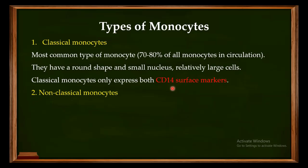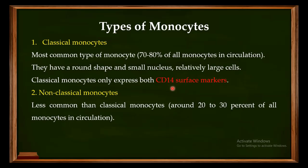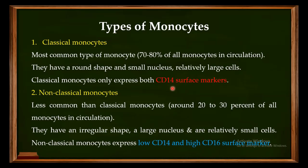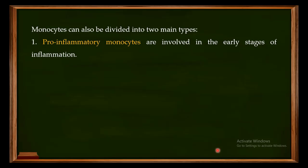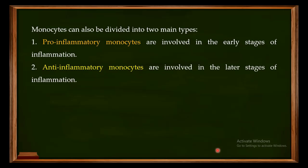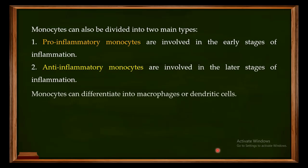The second type is the non-classical monocytes, which make up about 20 to 30 percent of all circulating monocytes. Compared to classical monocytes, non-classical monocytes express a low level of CD14 and a high level of CD16 surface markers. A second classification distinguishes pro-inflammatory monocytes, involved in the early stages of inflammation, from anti-inflammatory monocytes, involved in the later stages of inflammation.